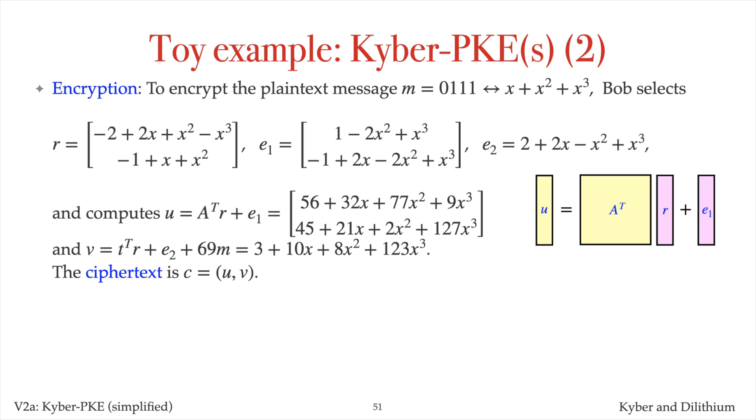To encrypt the message M equals 0, 1, 1, 1, which corresponds to the polynomial x plus x squared plus x cubed, Bob selects vectors R and E1 of small polynomials, and the small polynomial E2. He then computes U equals A transpose times R plus E1, and V equals T transpose times R plus E2 plus Q over 2 M. The closest integer to Q over 2 is 69. The ciphertext is UV.